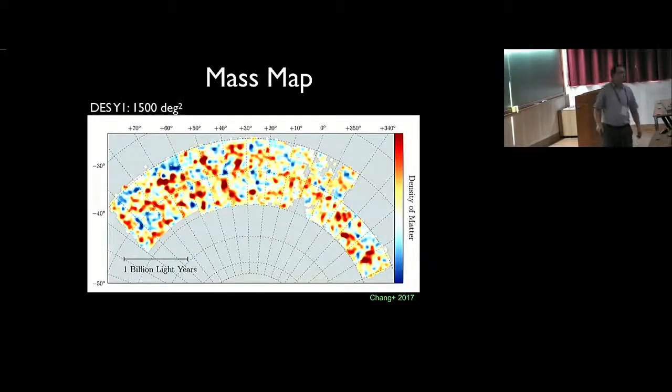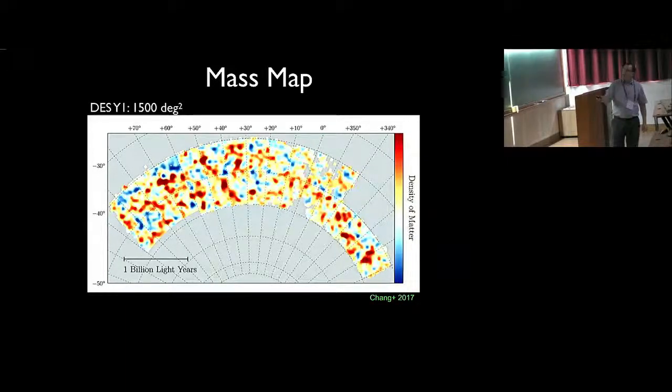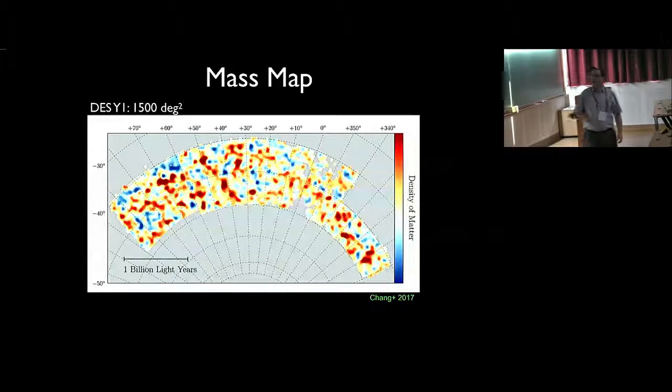This is the largest contiguous weak lensing map that has been done. It's very impressive. What is shown here is density plots. In red, you have the over densities, the places where the density field is the highest, and in blue is the under densities. You see these various structures.